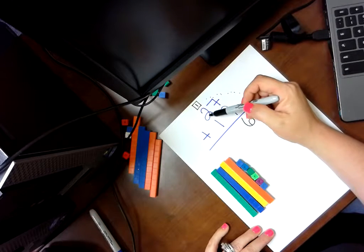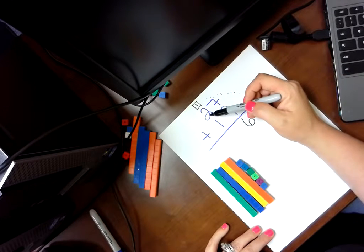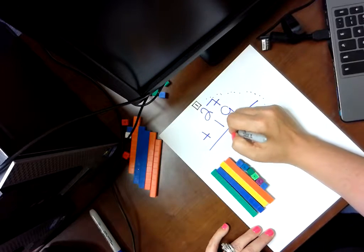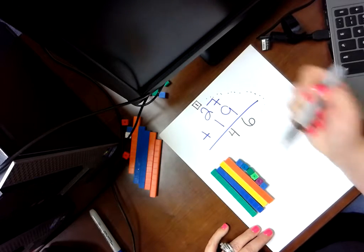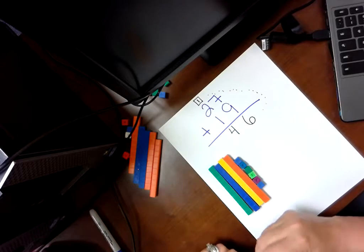Now, what's 1 plus 2? 3. Or 3 plus 1 is 4. 46. Isn't that what I have here? Cool. Awesome.